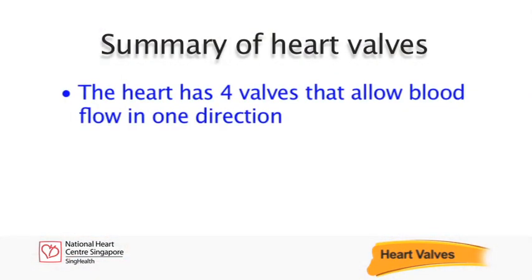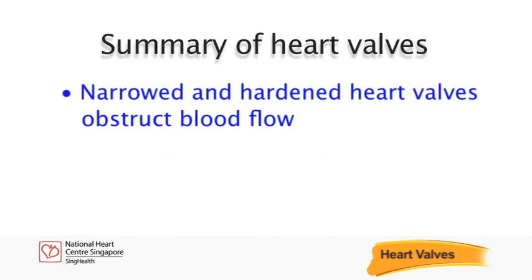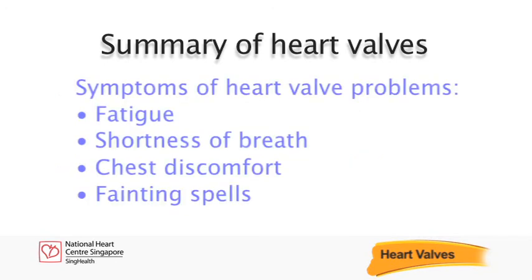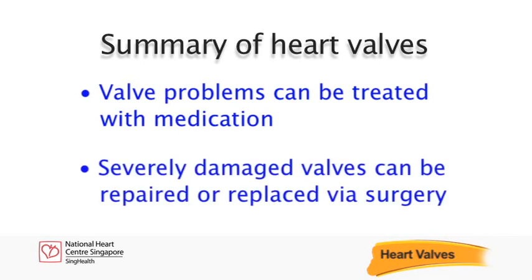To recap: the human heart has four valves that allow blood to flow in one direction. Faulty heart valves can cause blood to flow backwards into the heart through a process known as regurgitation. Narrowed and hardened heart valves obstruct blood flow, and such valve conditions can lead to heart failure if left untreated. Symptoms of heart valve problems include fatigue, shortness of breath, chest discomfort, and fainting spells. Valve problems can be treated with medication, and severely damaged valves can be repaired or replaced via surgery.